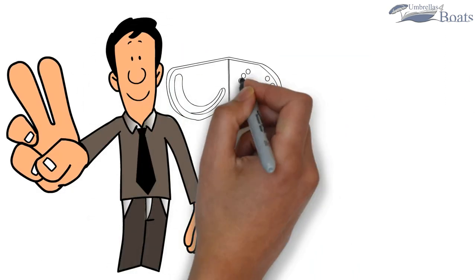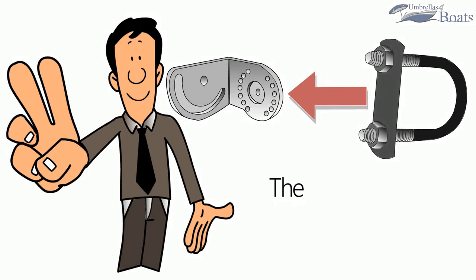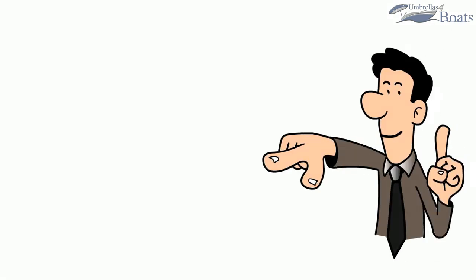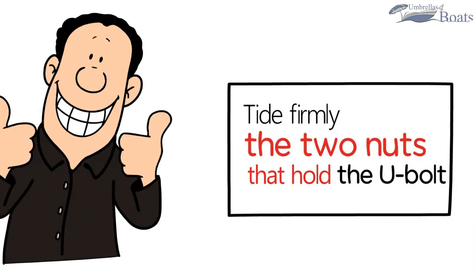Step 2. Install the L-shaped bracket. Insert the U-bolt into the L-bracket as shown. The upper side of the bracket must be level horizontally. Make sure the rubber gasket is placed between the bracket and the boat. Tighten firmly the two nuts that hold the U-bolt.